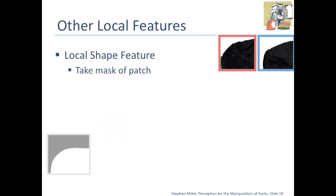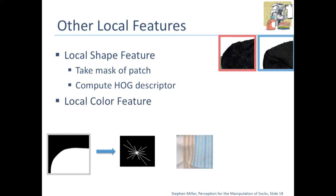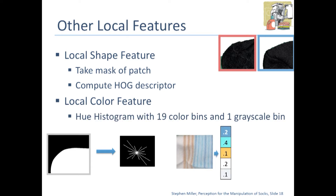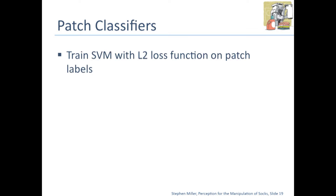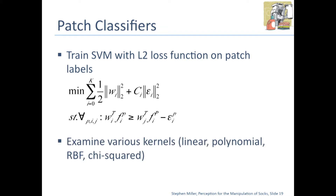We also use a local shape feature, where we take a mask of the patch. Since our socks are on a green background, we assume that we have a mask, and compute a HOG descriptor on that to get a local curvature estimate. We also use a local color feature, which is a hue histogram with 19 color bins and one grayscale bin. To get information out of these features, we train a support vector machine using an L2 loss function on patch labels, following standard multi-class SVM literature. We examine various kernels: linear, polynomial, RBF, or chi-squared.